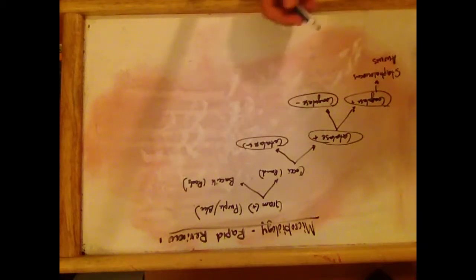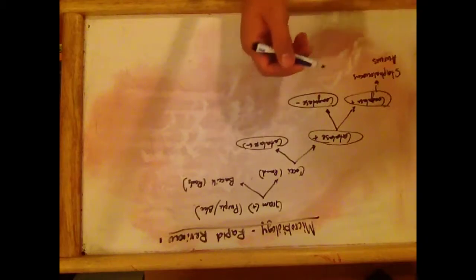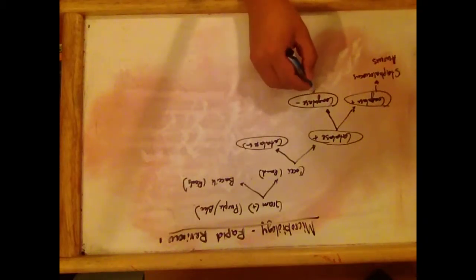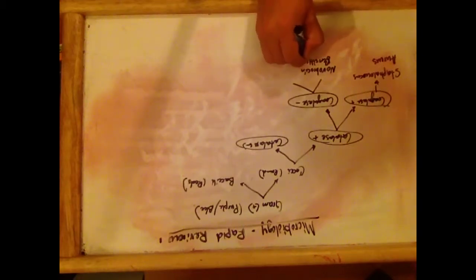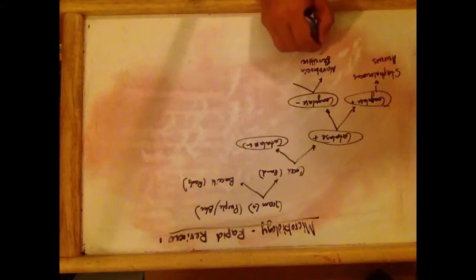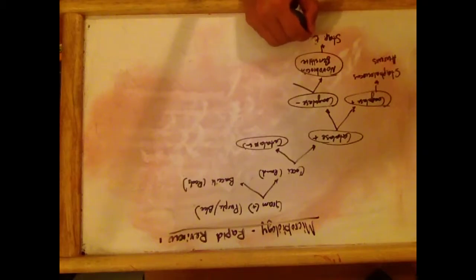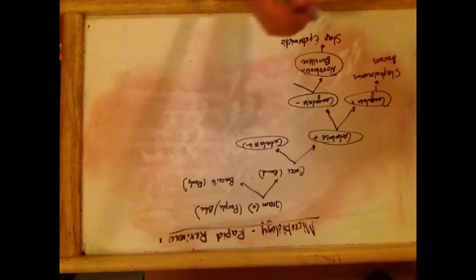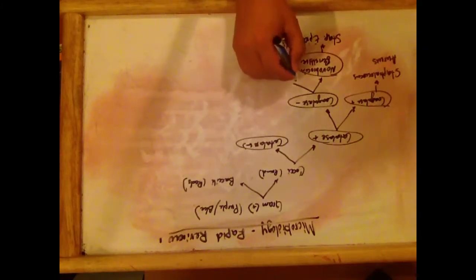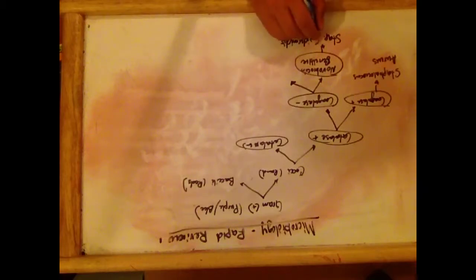To differentiate among the coagulase-negative Staphylococcus, we need to see if they are novobiocin-sensitive or resistant. If they are sensitive, then that would be Staphylococcus epidermidis. This is how I memorize it: it's on the skin, so it's very sensitive. Staphylococcus epidermidis is mainly on the skin, so it's sensitive to novobiocin.